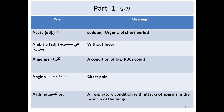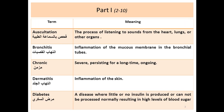Asthma is a respiratory condition with attacks of spasm in the bronchi of the lungs. It is a chronic disease. Auscultation is the process of listening to sounds from the heart, lungs, or other organs — that is what we mean by auscultation; it is an instrument used by a doctor. Bronchitis is an inflammation of the mucous membrane in the bronchial tube, so the suffix -itis means inflammation.